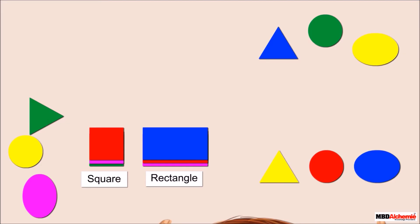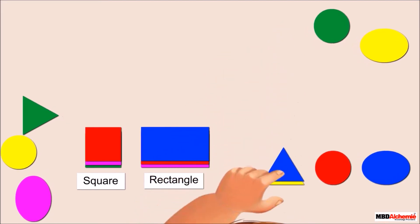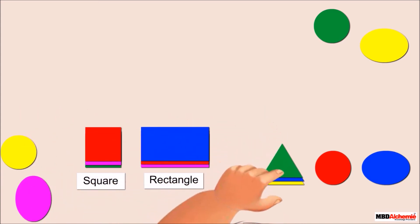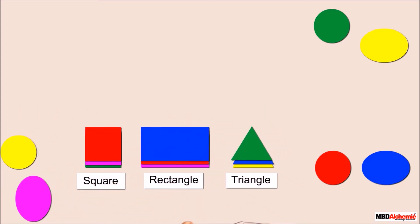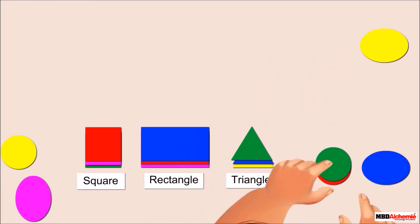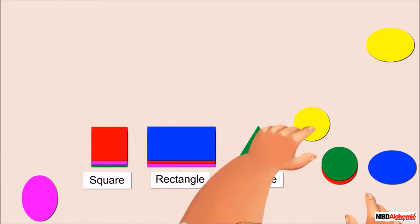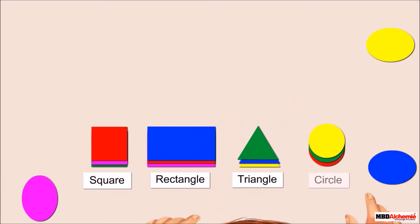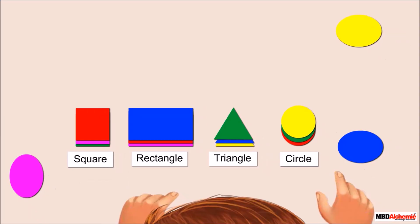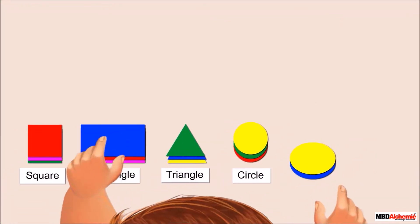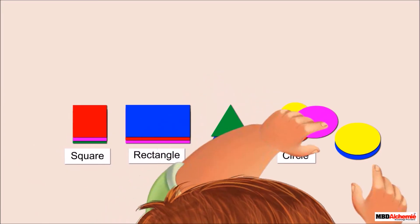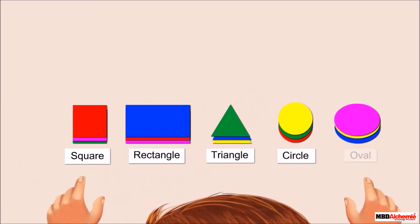Next, Neil groups the triangle shaped cards, which are also three in total. Then, he groups the circle shaped cards — same number, three in total. Lastly, he groups the oval shaped cards. They are also three.